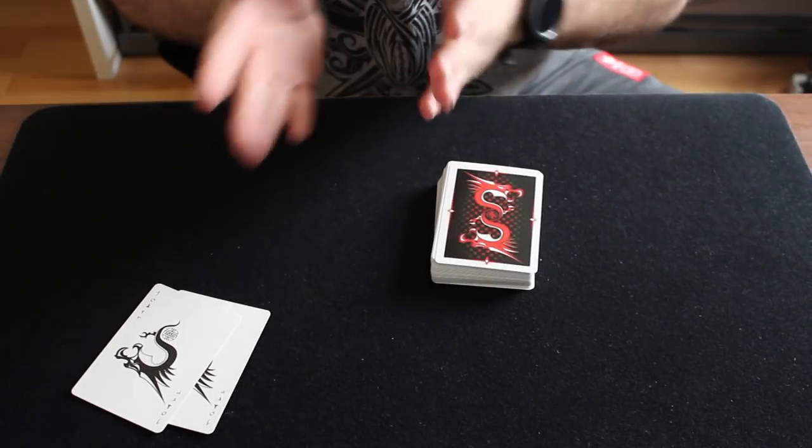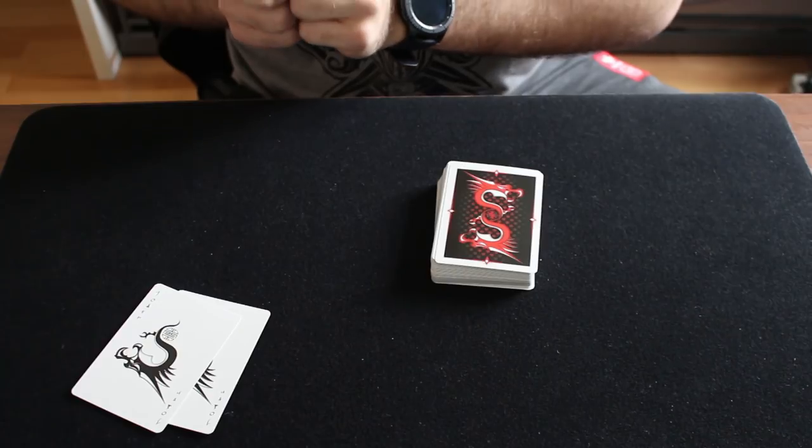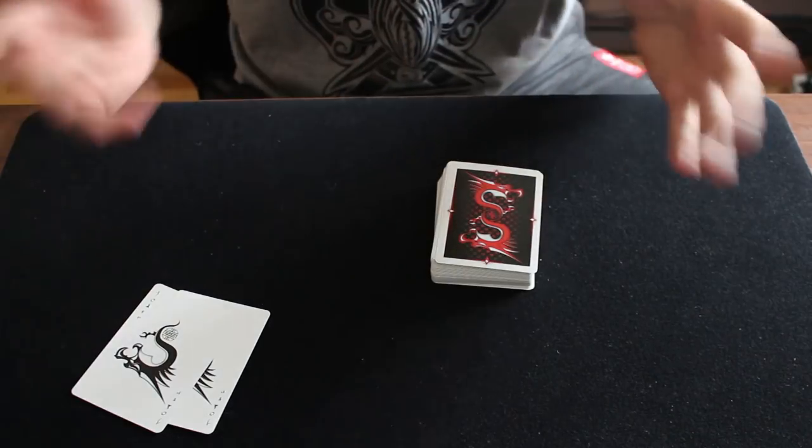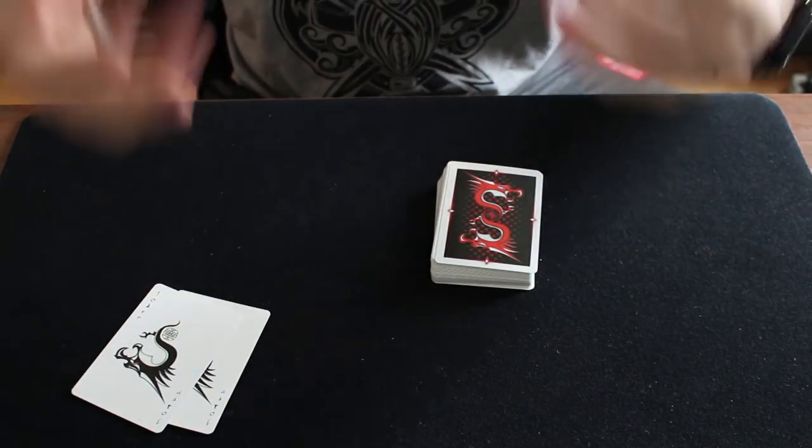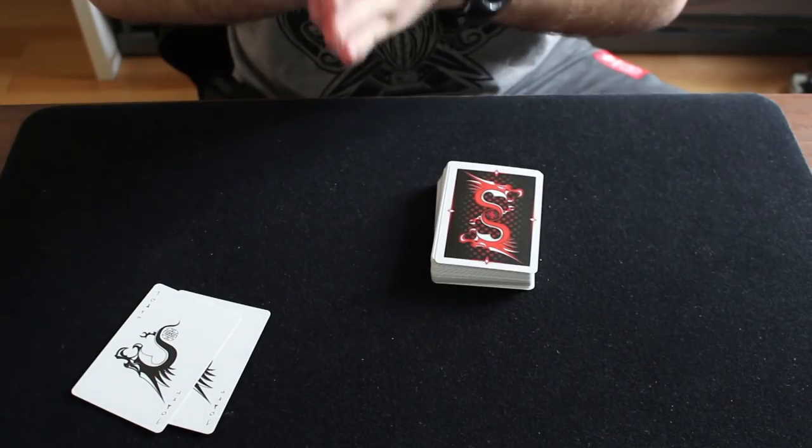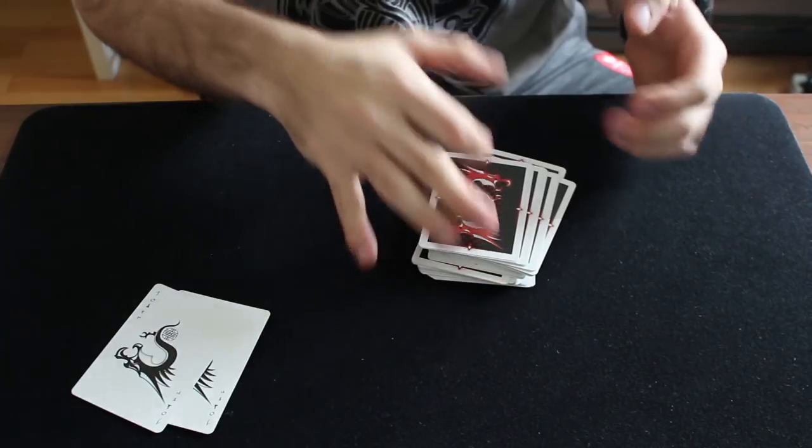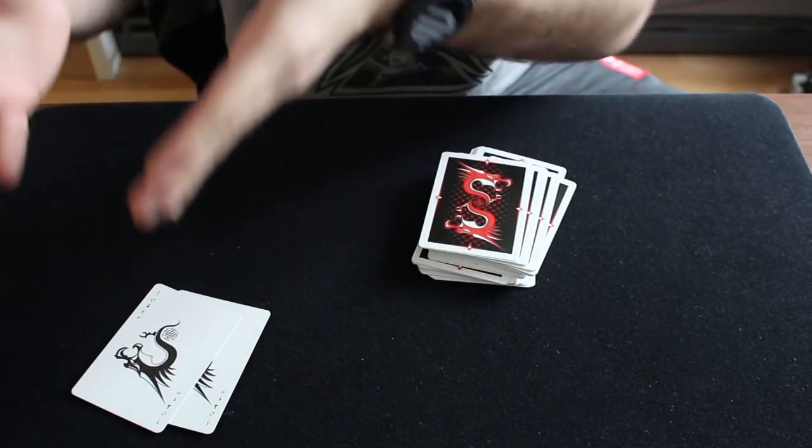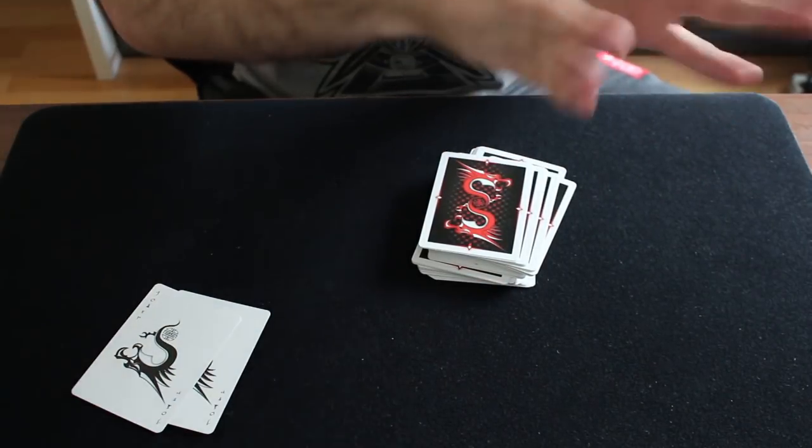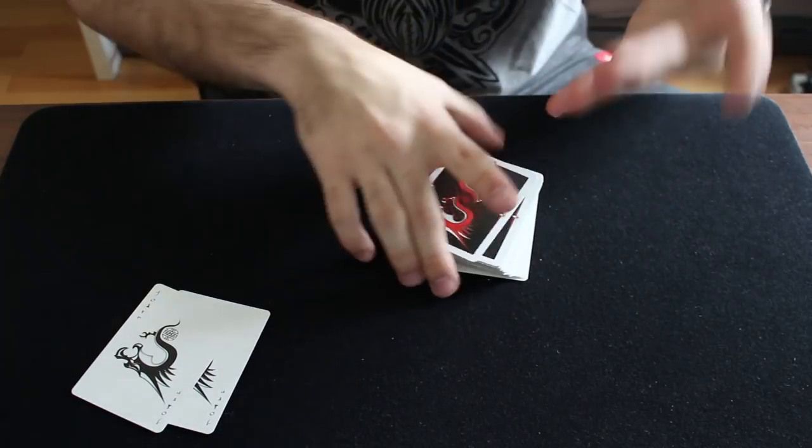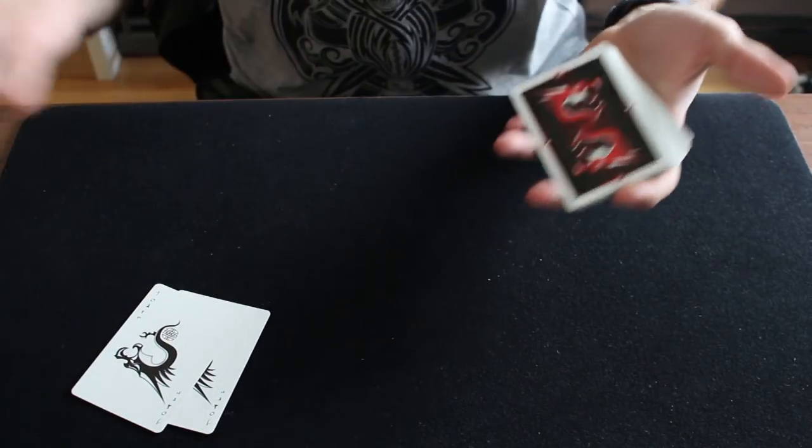So guys, for this effect I will need the two jokers starting on the table for now. And I will need my spectators because this trick is gonna be all about their decisions. First spectator, please think of any number. Any number will do, let's say a small number from 1 to 20.